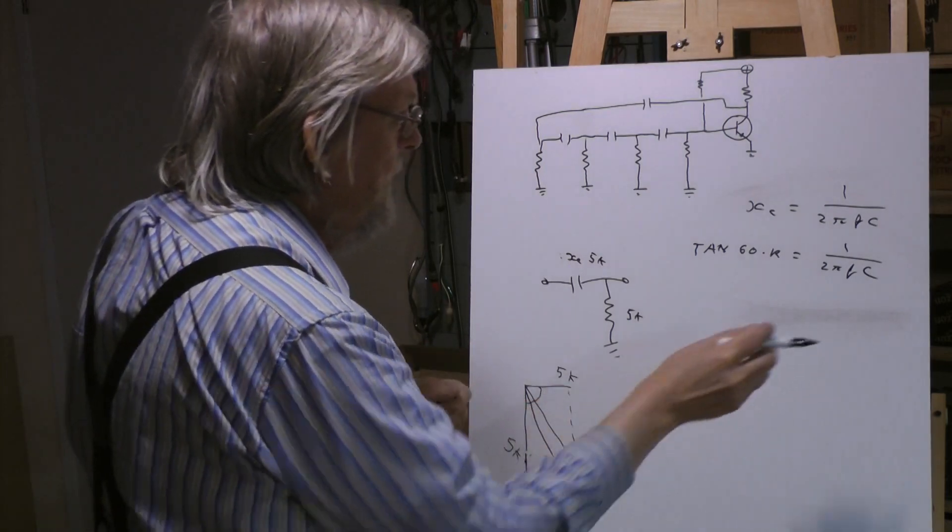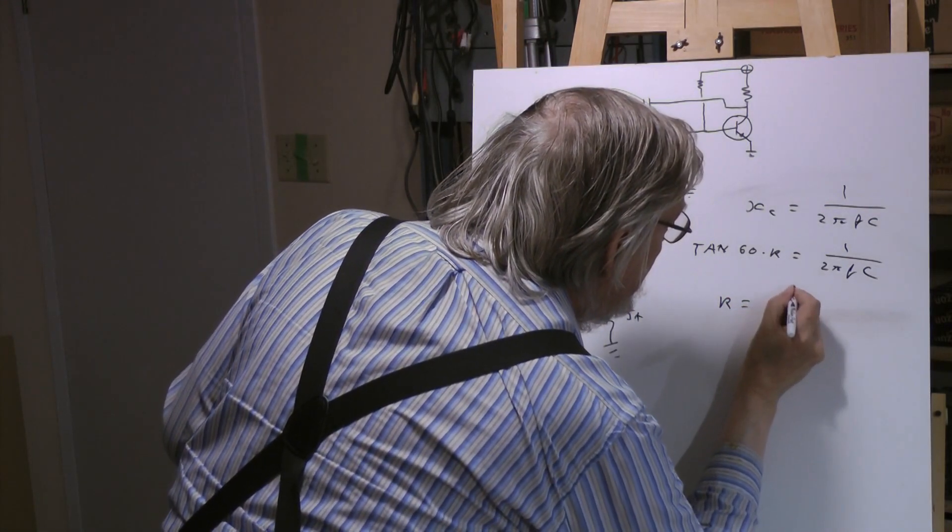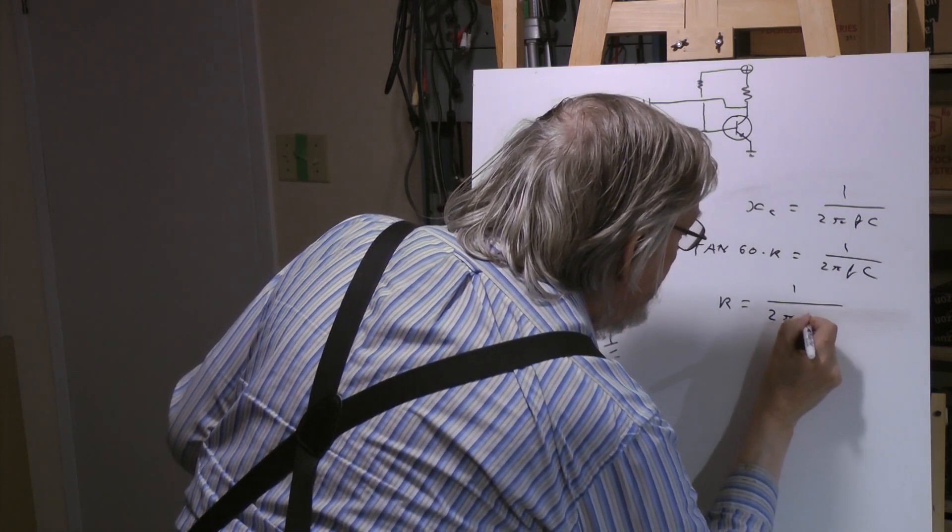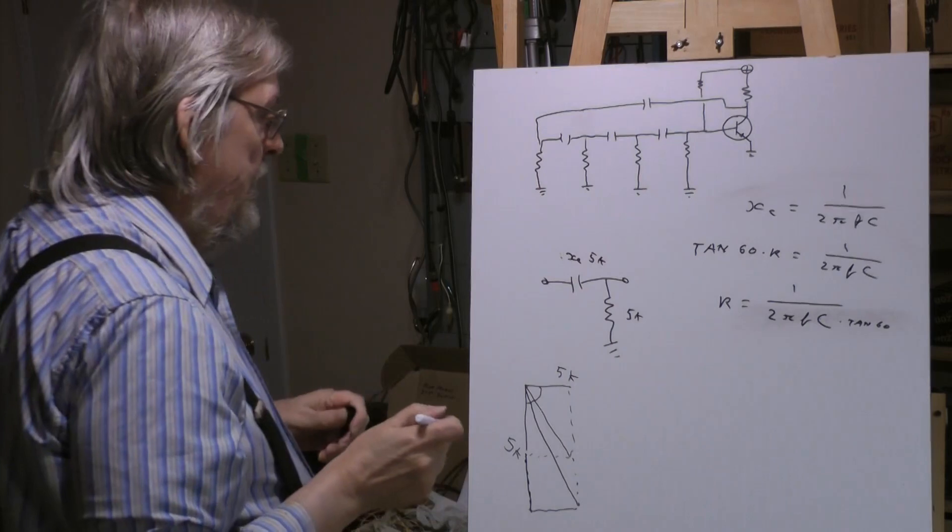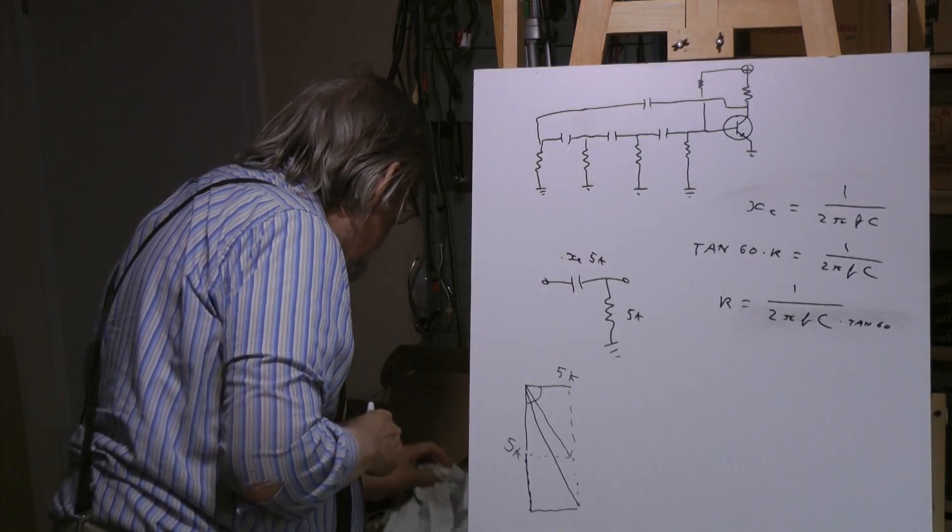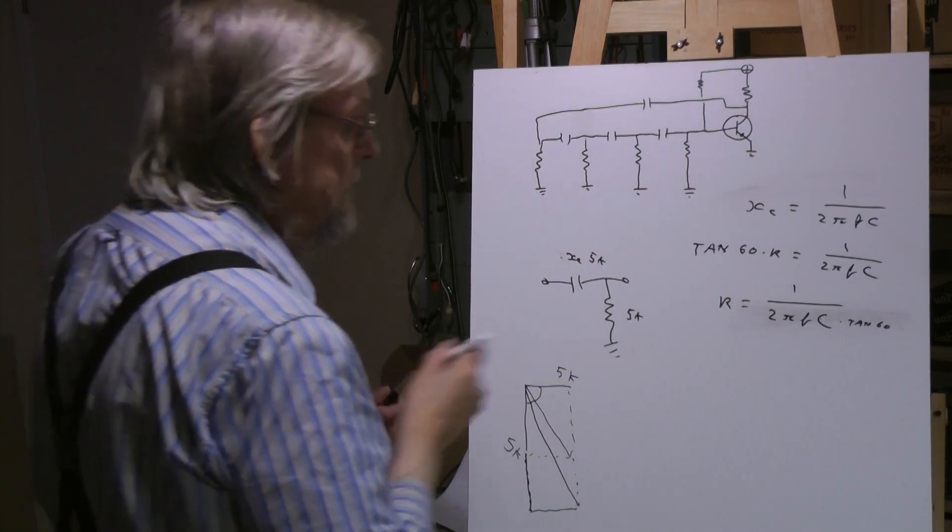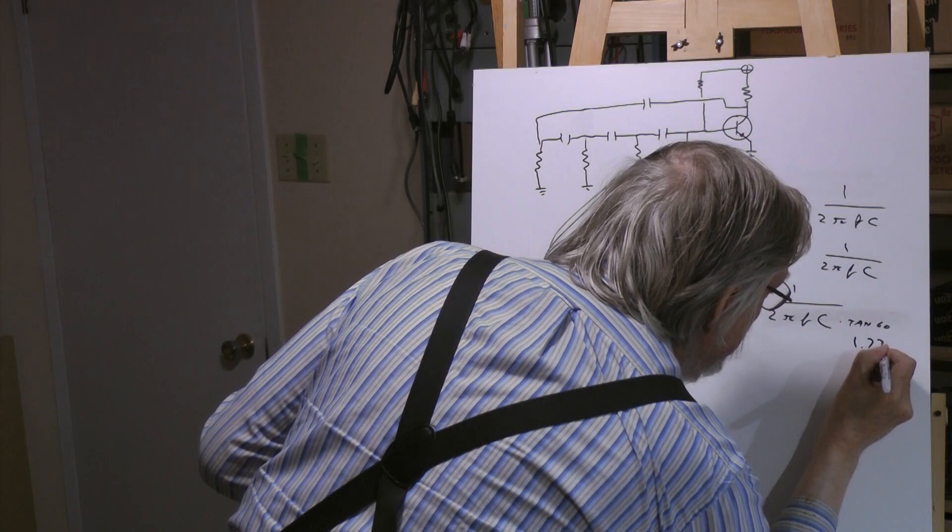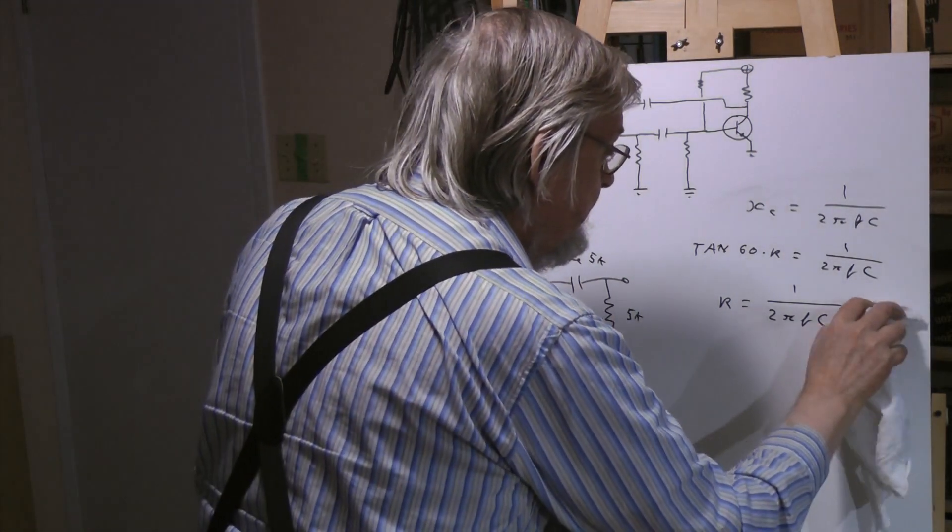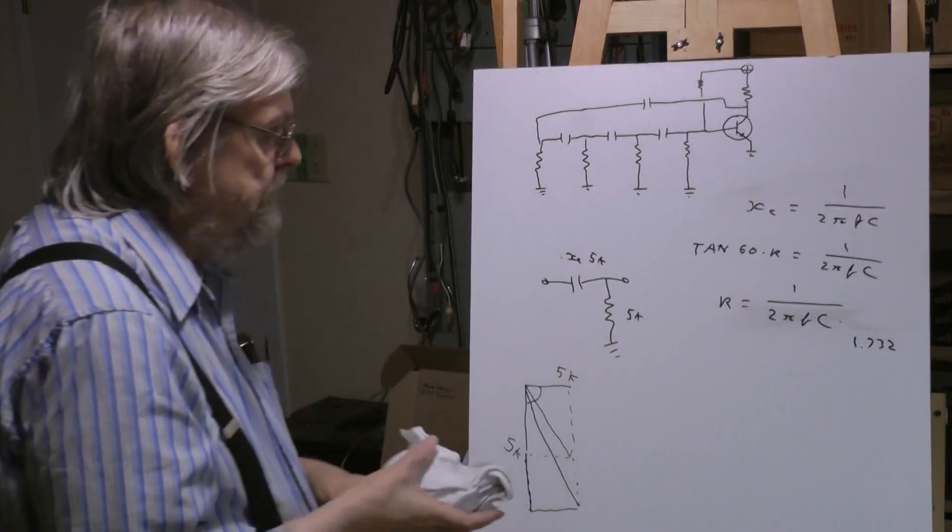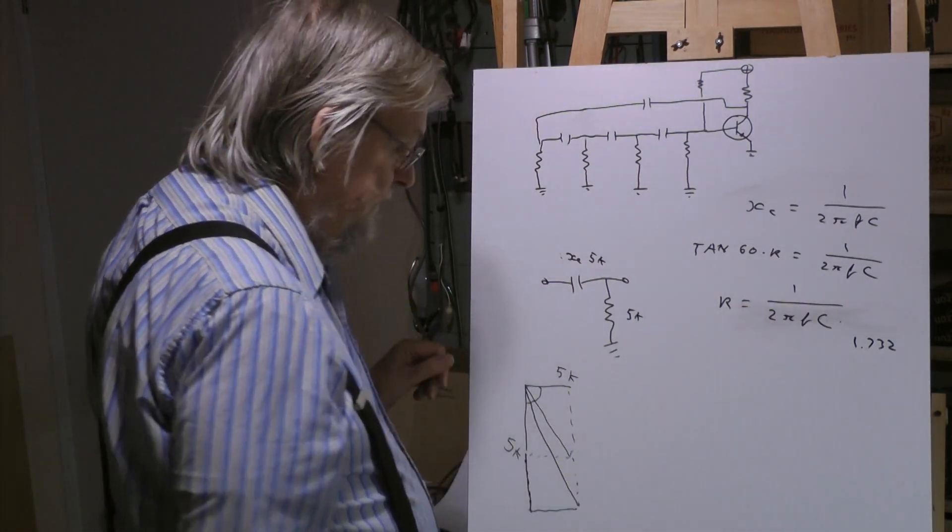Again with the manipulation we could say R equals 1 over 2 pi Fc tan 60. Well we can calculate tan 60, which I've already done. Tan 60 is 1.732. So R equals 1 over 2 pi Fc times 1.732. If you know your frequency, you know your capacitor, you can find your resistor value.